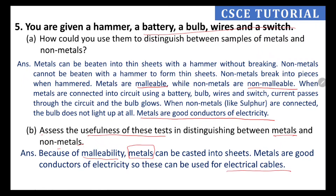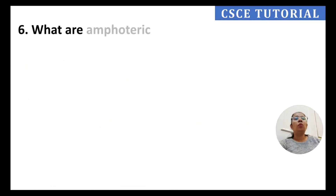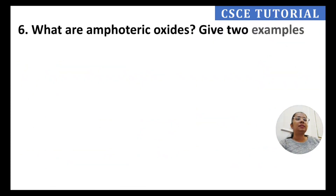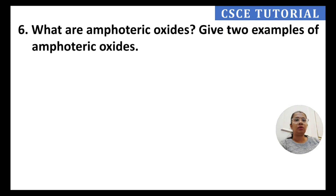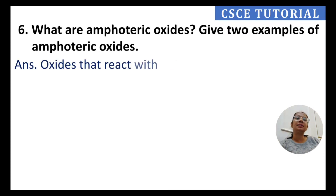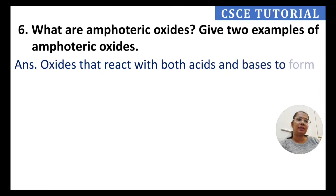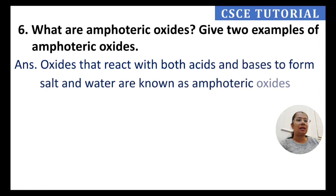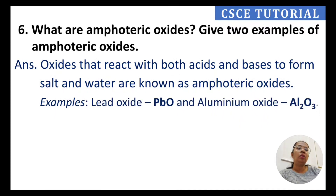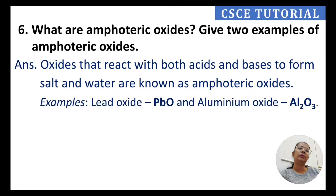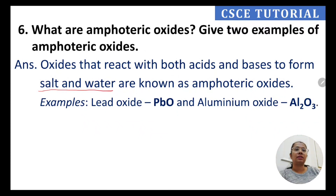Question 6: What are amphoteric oxides? Give two examples. Oxides that react with both acids and bases to form salt and water are known as amphoteric oxides. Examples: lead oxide (PbO) and aluminium oxide (Al₂O₃). These oxides show reactions with both acids and bases.